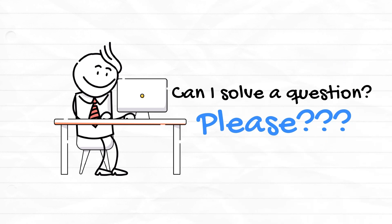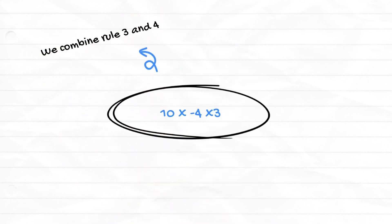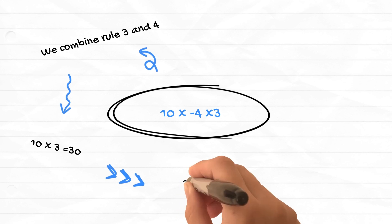One for me, please? Sure. So, to solve this, I will multiply 10 and 3 to get 30 first, and then with negative 4 to get negative 120. Awesome.